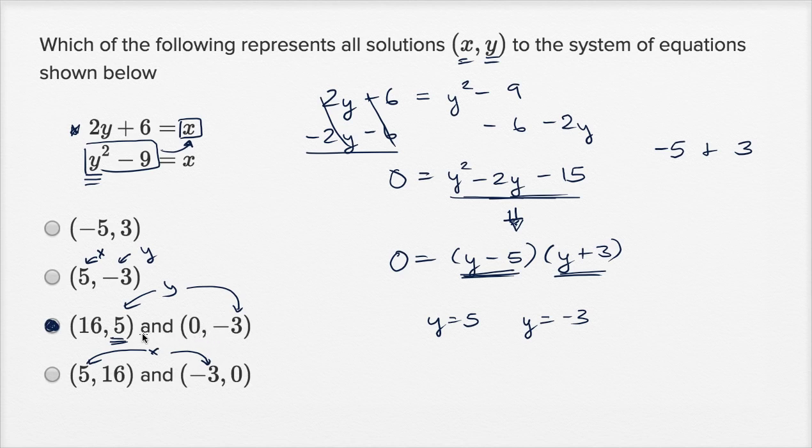But if you want to feel good that when y equals 5, x equals 16, and when y equals negative 3, x is equal to 0, you can substitute into this first equation. 2 times 5 plus 6 is equal to x. When y equals 5, you have 10 plus 6, so x equals 16 when y equals 5. And that's what we saw right over here. When y is 5, x is 16.